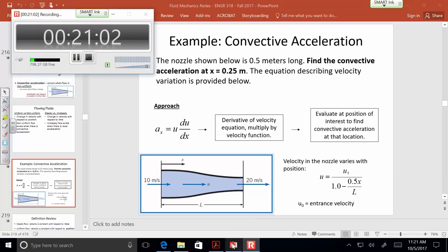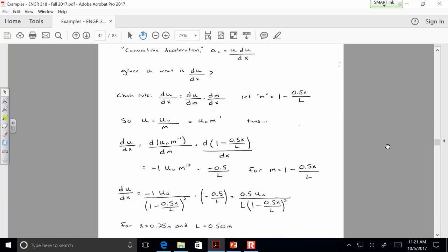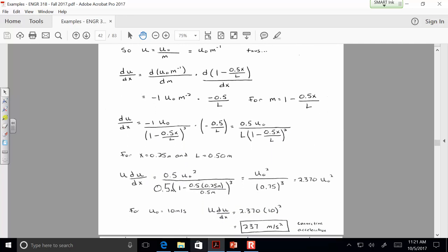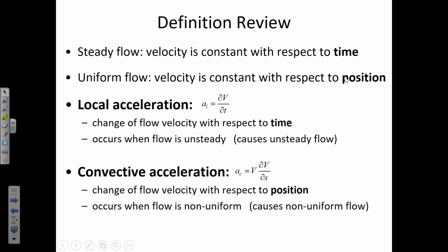The solution has been on the screen during recording. If you weren't able to copy something down or want to review it, it's available in the recording before the homework assignment. To review: steady flow is when velocity is constant with respect to time; uniform flow is when velocity is constant with respect to position. Local acceleration is change in velocity with respect to time; convective acceleration is change with respect to position, but we must multiply the positional change by the velocity at that location to find the acceleration.